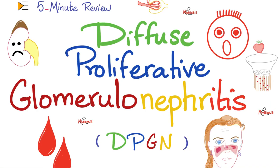Hello lovely people, this is Medicosis Perfectioneros where medicine makes perfect sense. Let's continue our 5-minute review playlist. In the last videos we talked about membranous nephropathy, diabetic nephropathy and amyloid nephropathy. Today it's time to discuss diffuse proliferative glomerulonephritis.